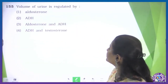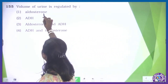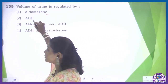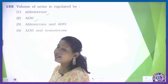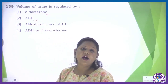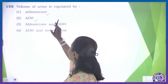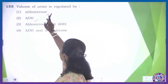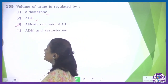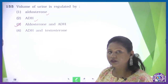Question: the volume of the urine is regulated by? The volume of the urine is regulated by aldosterone — yes, true. And ADH, that is the anti-diuretic hormone — that is also true. It acts in the distal part of the nephric tubules. Both aldosterone and ADH are mentioned together in the third option. So we will follow the third option.